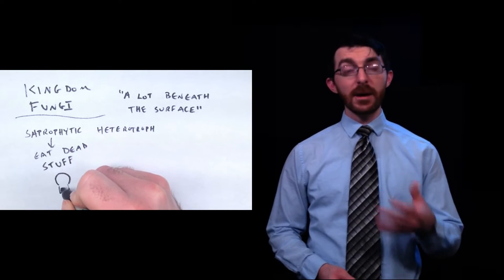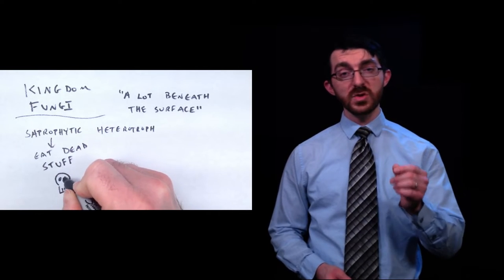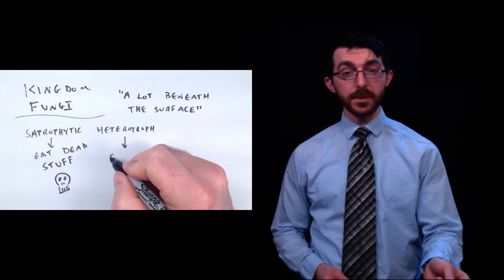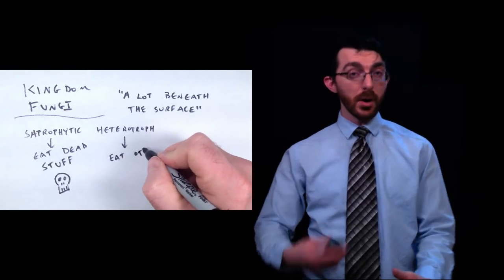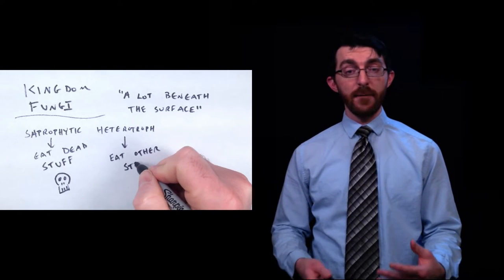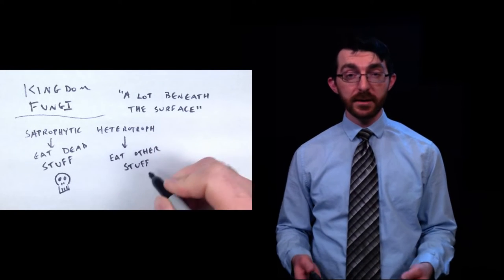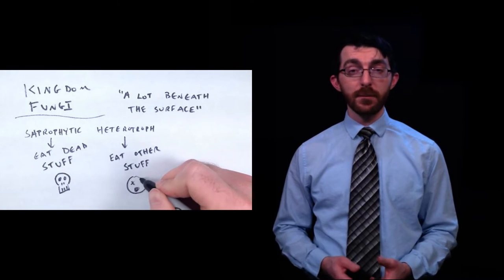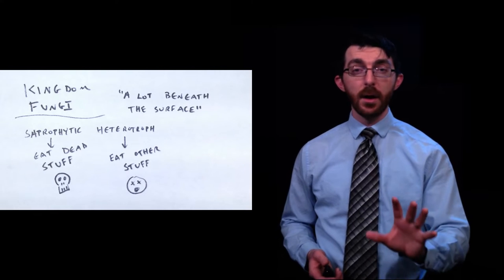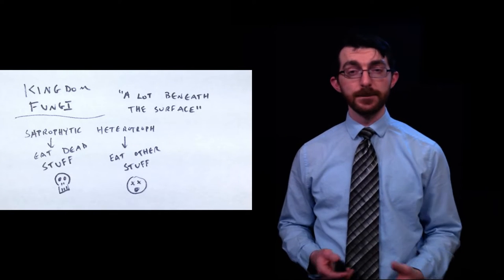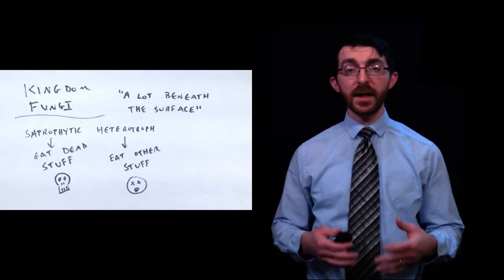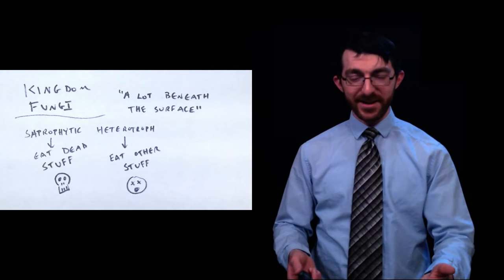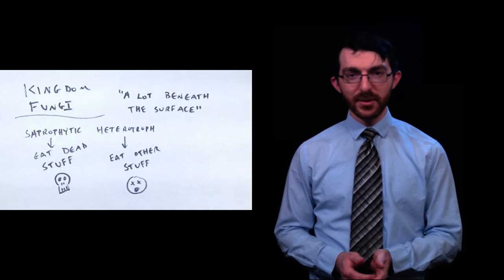You are also a heterotroph if you consume the bodies of other organisms for your nourishment. This would be the opposite of an autotroph, which would be like a producer - say a photosynthesizing plant or bacteria that makes its own food. If you are a heterotroph, you need to consume something else for food, for energy and nutrition. So a saprophytic heterotroph eats other things that are dead.